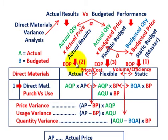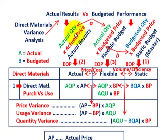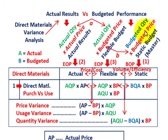Now we know our actual results at the end of the period and our static budgeted amount from the beginning of the period. The flexible budget is simply our actual quantities purchased times the budgeted price — that budgeted price comes from our static or master budget amount.